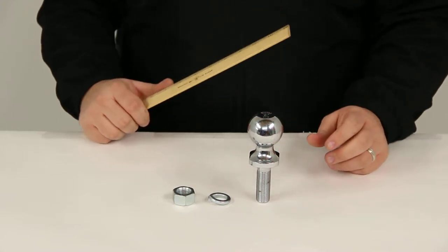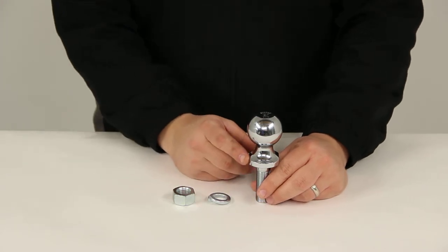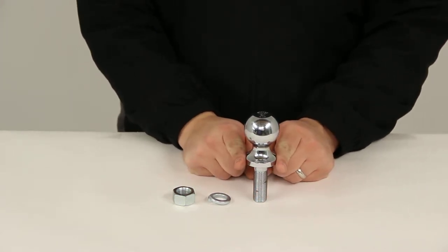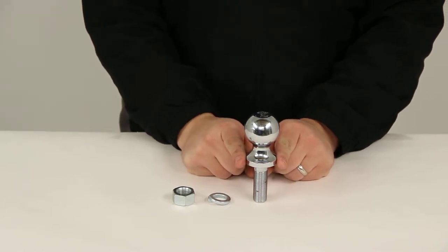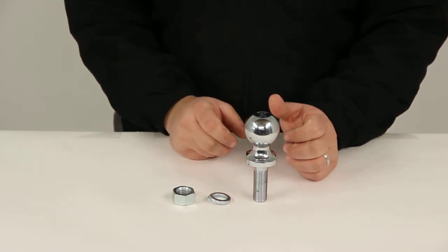Our hitch ball has a capacity of 2,000 pounds. It has a really nice chrome plated finish so it's going to stand up well against corrosion and rust, and it also provides wrench flats on each side of the ball at the base. That way we can securely grip it and torque it down to the specifications from the manufacturer.